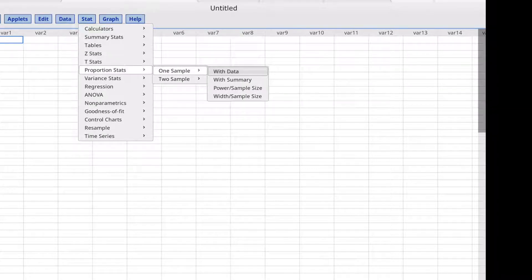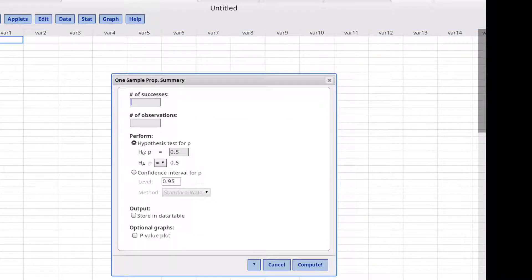One Sample with Summary. The number of successes was 520. The number of observations was 1,070. We are to construct a confidence interval with 90% confidence.